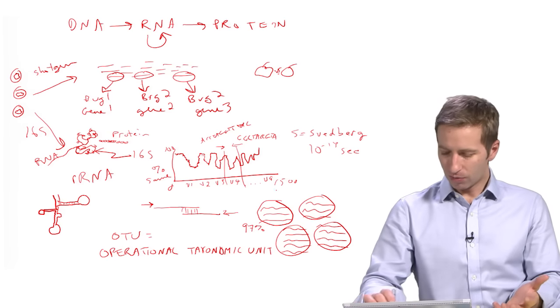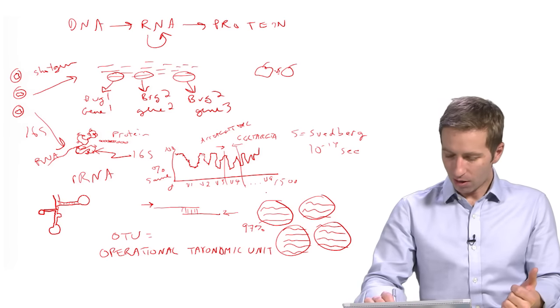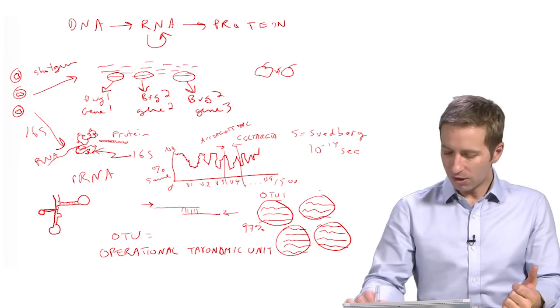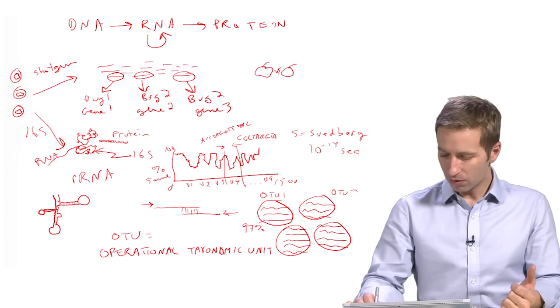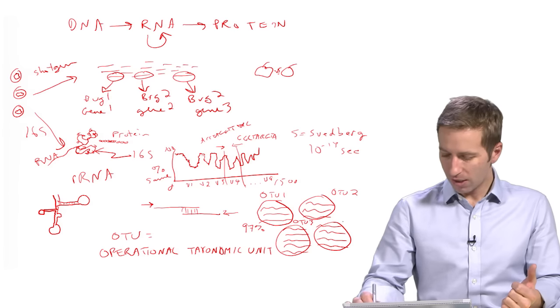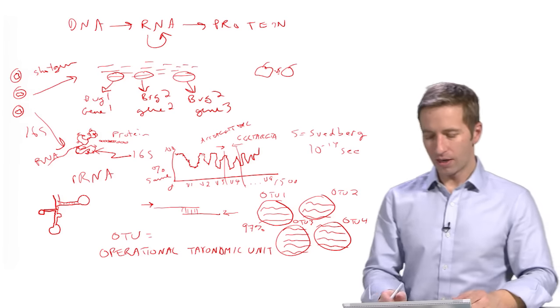And we have no idea what these are, so we just label them arbitrarily. Let's call all of these sequences OTU1. These will be OTU2, OTU3, OTU4, and so on.